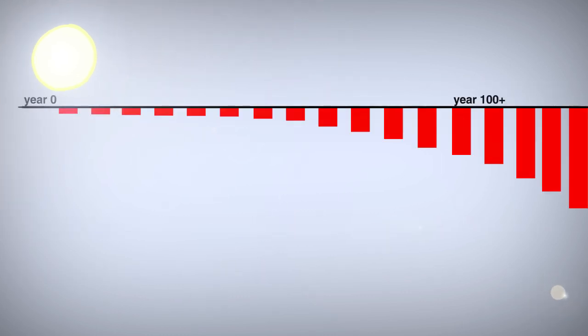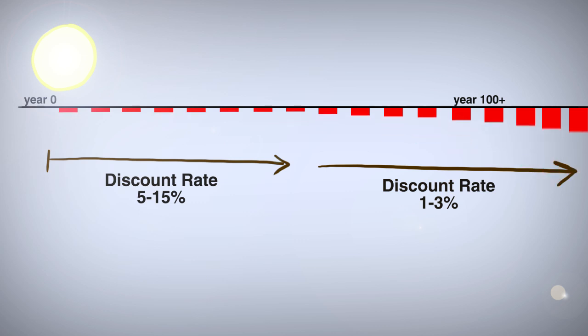To fix this, some suggest using a lower discount rate, say 1-3% for the distant future. And it's suggested this is how people actually value the future.